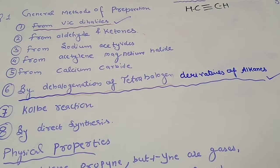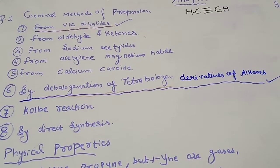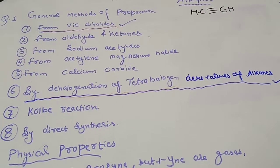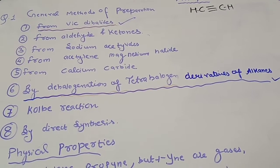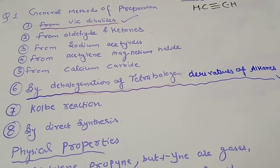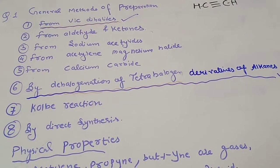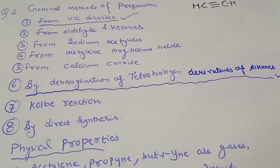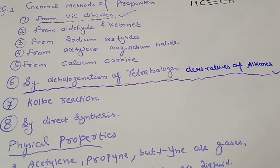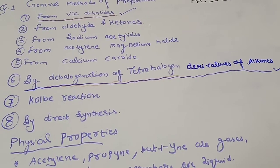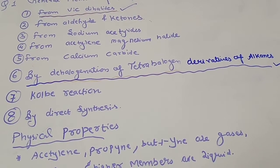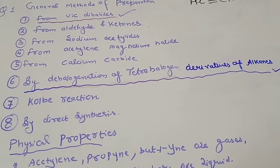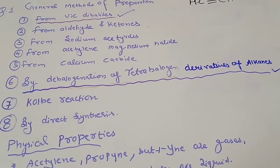The general preparation methods of alkynes are as follows: first, from the vicinal dihalides; second, from the aldehydes and ketones; third, from the sodium acetylides; fourth, from the acetylene magnesium halides; fifth, from the calcium carbide; sixth, from the dehalogenation of the tetrahalogen derivatives of alkanes; seventh, from the Colby reaction; and eighth, from the direct synthesis.